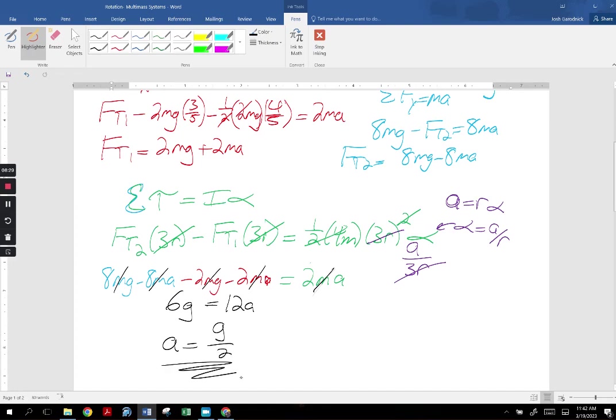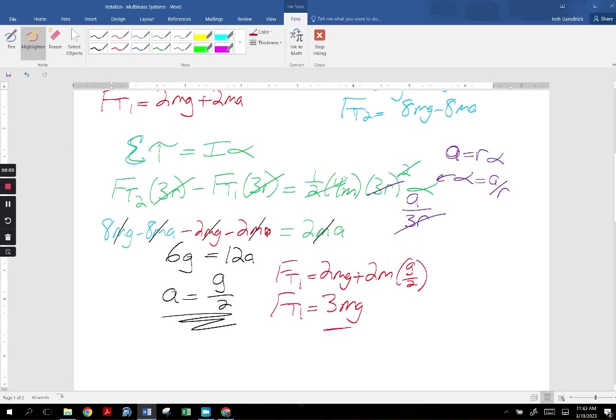Now, if we wanted to calculate FT1, we can do that. FT1 would be 2MG plus 2M. A is G over 2. So we get FT1 equals 3MG. FT2 is going to be 8MG minus 8M times, again, A is G over 2, and A is the same for all of them, so that we get FT2 equals 4MG.